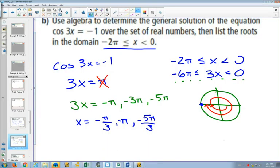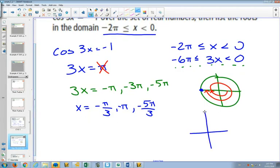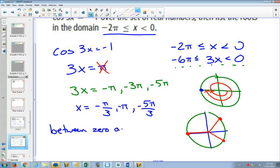So that's in the domain from negative 2 pi to 0. But this question also said, use algebra to determine the general solution. So the general solution, normally you find all your answers between 0 and 2 pi, and then you add 2k pi to them. Where are these answers? Let's just draw these negative angles on our unit circle to picture them. Would you agree? Negative pi over 3 is right here. Negative pi is right there.